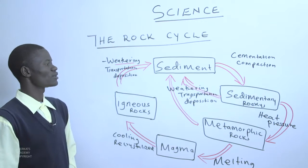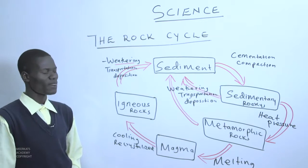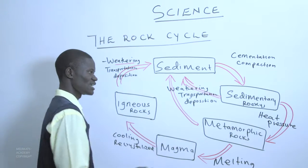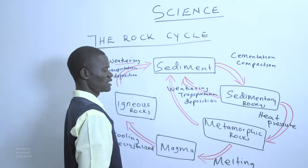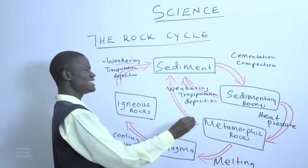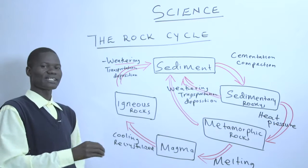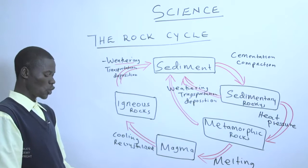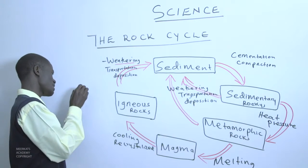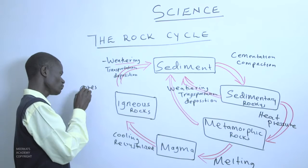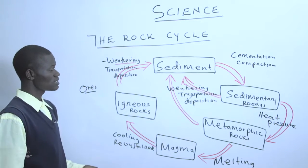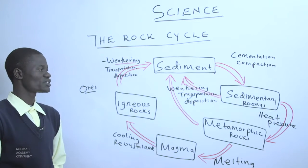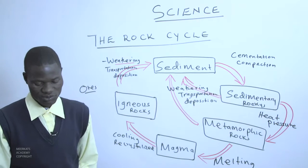After looking at the rock cycle, we are able to understand various forms of rocks such as igneous rocks, sedimentary rocks, and metamorphic rocks. But inside these rocks, it is the rock that bears the mineral elements. We refer to them as ores. Therefore we will be able to look at the ores and the various processes over which these ores can be extracted as we move on.